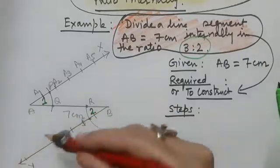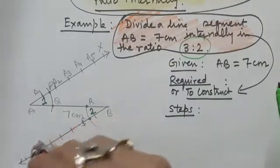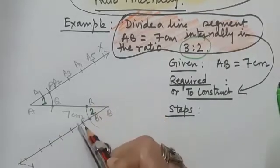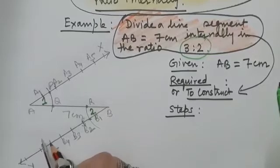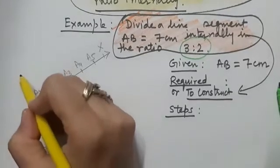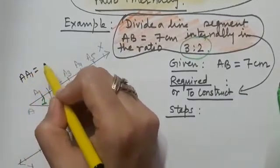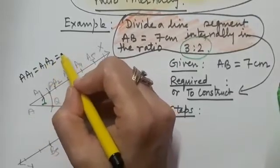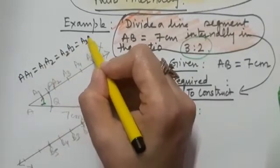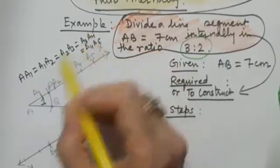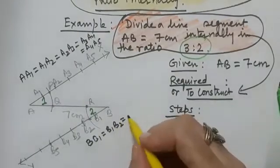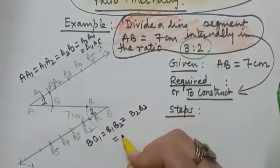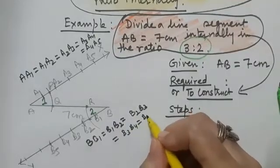Similarly on BY, mark 5 equal arcs from B such that BB1 = B1B2 = B2B3 = B3B4 = B4B5. Label the points B1, B2, B3, B4, B5 along ray BY. So AA1 = A1A2 = A2A3 = A3A4 = A4A5, and similarly BB1 = B1B2 = B2B3 = B3B4 = B4B5.